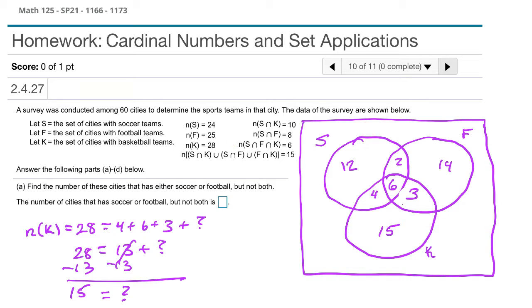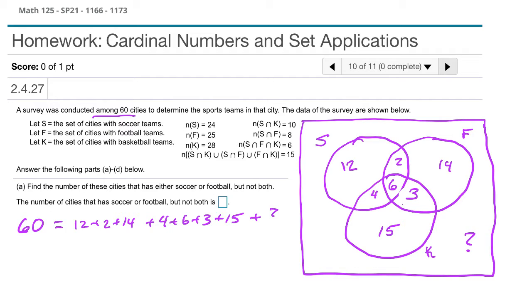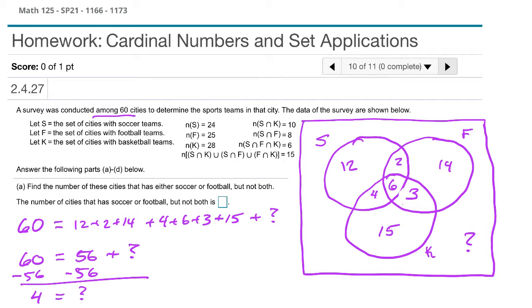Now we can figure out how many cities are outside all three circles. We know the total is 60. We've accounted for 12, 2, and 14 in the soccer and football regions, then 4, 6, and 3 in the overlaps, and 15 in the basketball-only region — a total of 56 accounted for. So 60 equals 56 plus the unknown, giving us 4 cities outside all three sets.